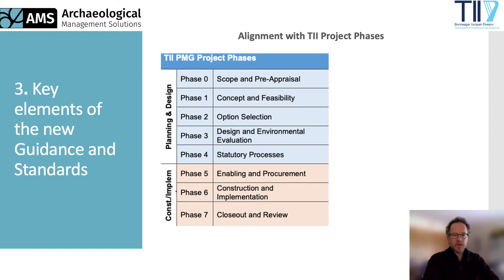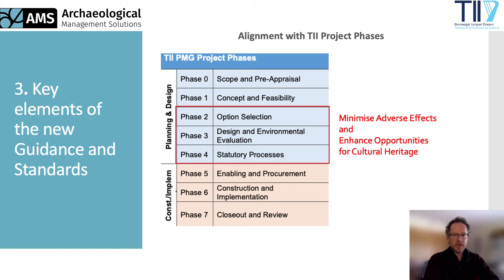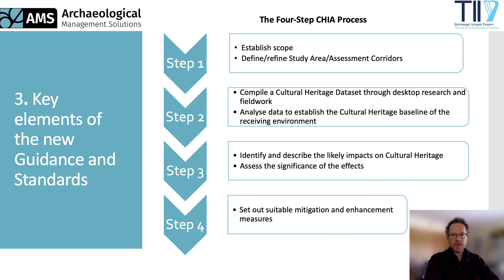The new guidelines and standards are structured around the phases and stages set out in TII's Project Management Guidelines, or PMG. Cultural heritage impact assessment is a process that extends across PMG phases 2 to 4, and within each phase the cultural heritage input seeks to minimise adverse effects and enhance opportunities for cultural heritage wherever possible, using a four-step process for each iteration of planning and design. Step 1: establish scope and define or refine the study area or assessment corridors depending on the project phase. Step 2: compile a cultural heritage data set and analyse data gathered through desktop research and fieldwork to establish the cultural heritage baseline. Step 3: identify and describe the likely impacts on cultural heritage and assess the significance of effects. Step 4: set out suitable mitigation or enhancement measures to be considered during option selection and design, including measures to be implemented during construction and operation of the project post-consent.